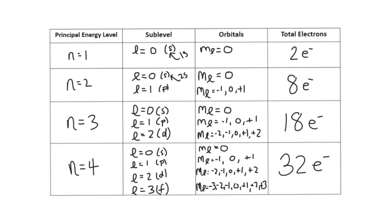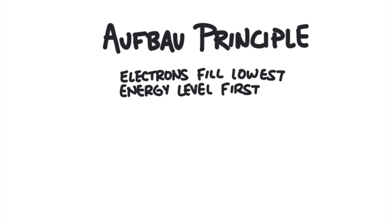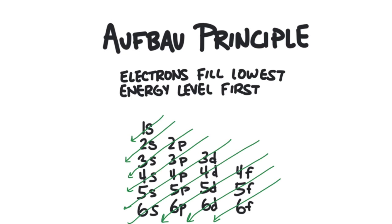The quantum numbers are the address of an electron, but how do we know which energy levels, sublevels, and orbitals the electron will occupy? There is an order to the way the sublevels are filled. The Aufbau Principle states that electrons will fill the lowest energy level first. There's a useful trick: write out the sublevels in a grid, then draw diagonal lines. The order that the levels get filled follows these diagonal arrows.